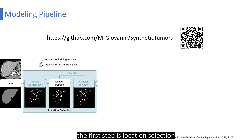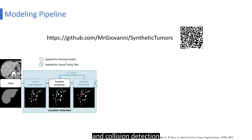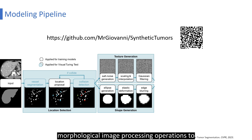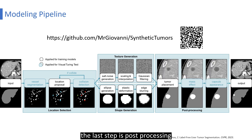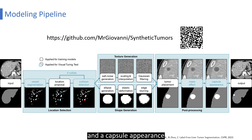The first step is location selection, including vessel segmentation, location proposal, and collision detection to select a proper location for the tumor. The next two steps are texture generation and shape generation, where we use a sequence of morphological image processing operations. The last step is post-processing, where extra pipelines simulate the mass effect and a capsule appearance to get a realistic liver tumor for medical professionals.